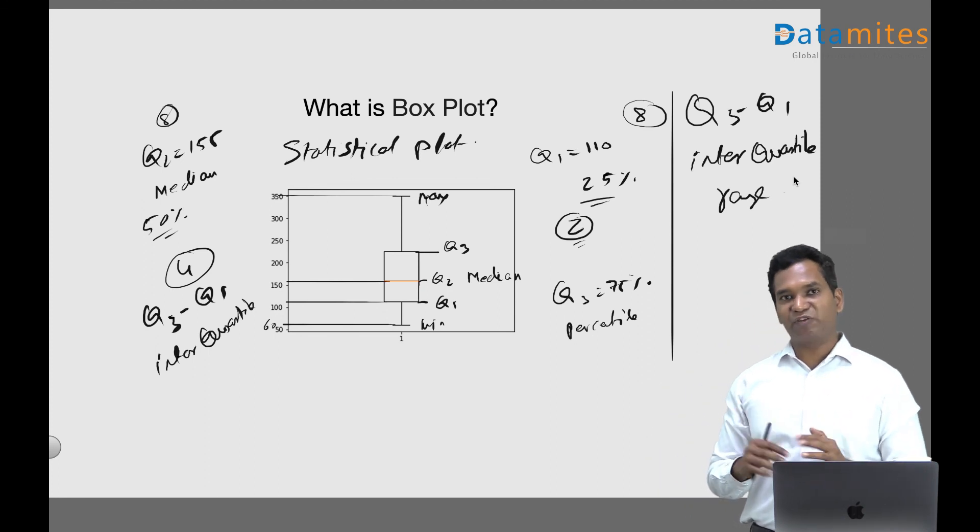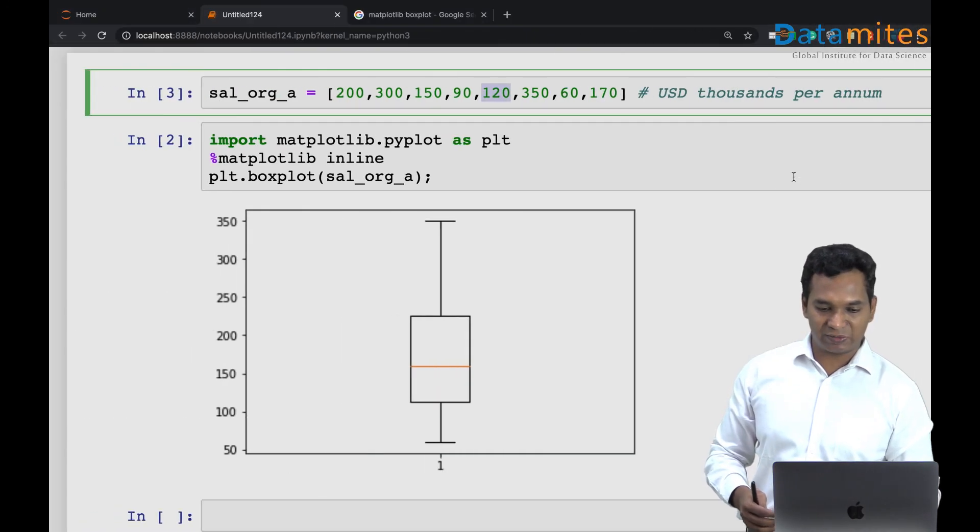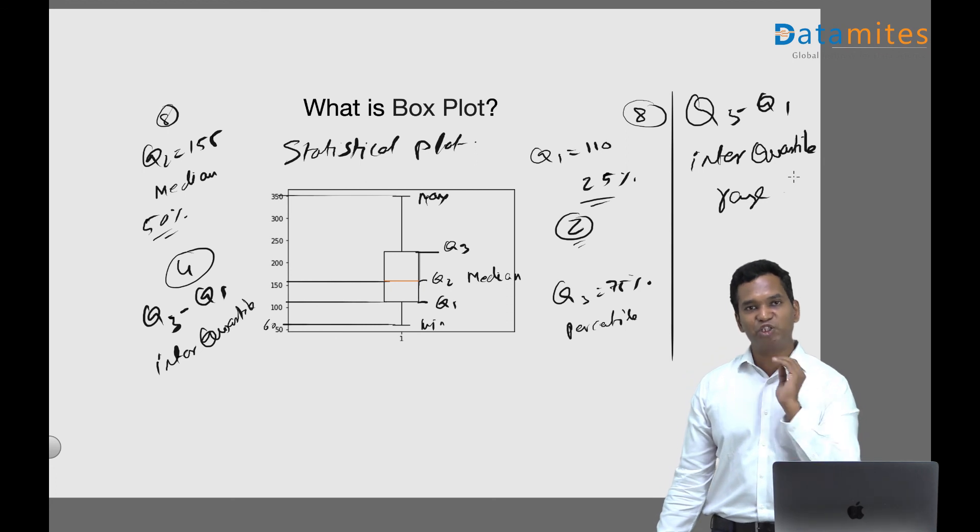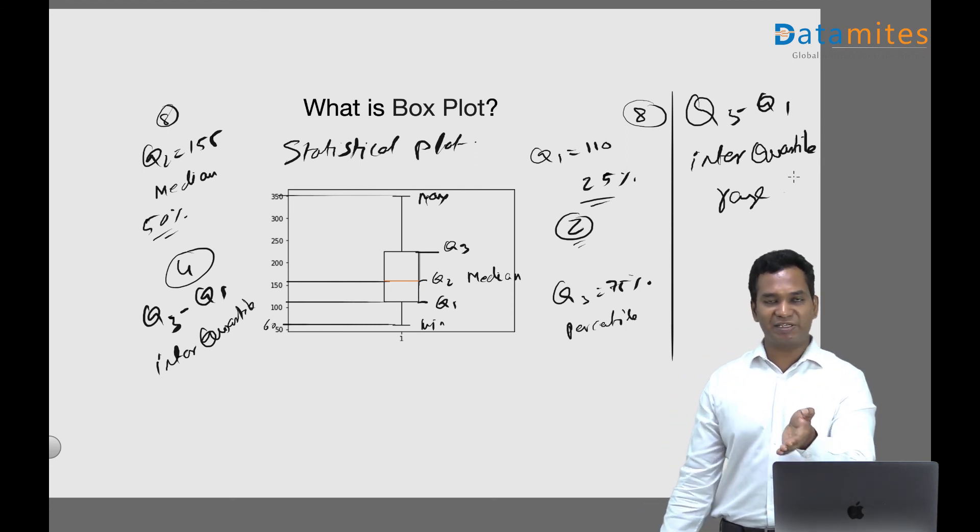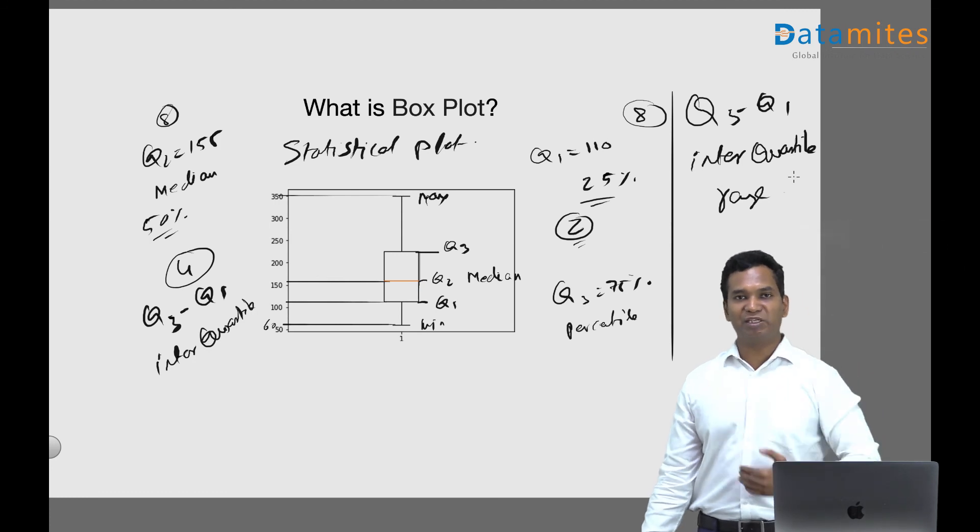So that's the kind of interpretation. Inter quartile range also tells you a lot of information, especially in this use case of salaries. That's your box plot. Box plot gives you a visual representation of descriptive statistics with respect to Q1, Q2, Q3, Q2 being the median, maximum, minimum. So you can visually understand the distribution of the data.